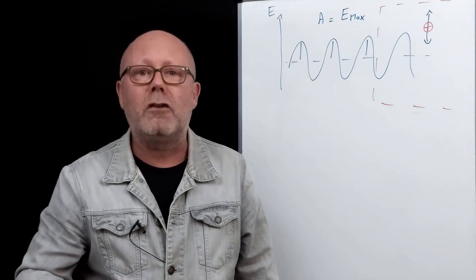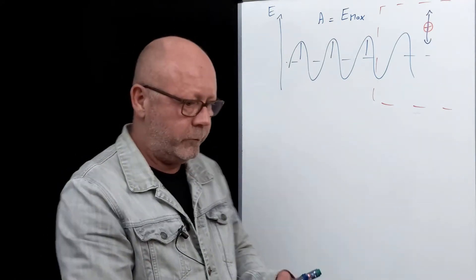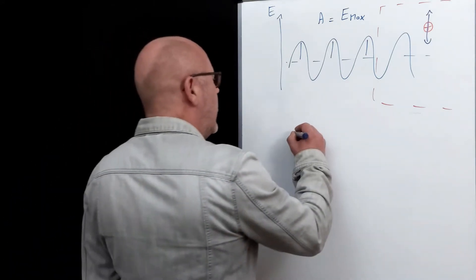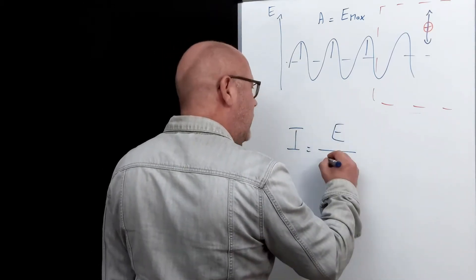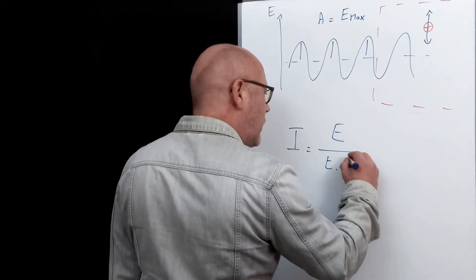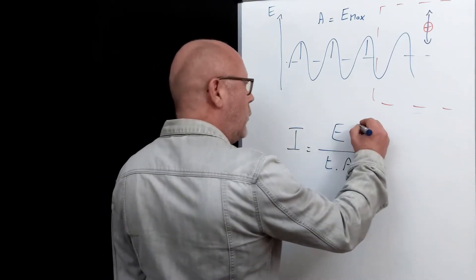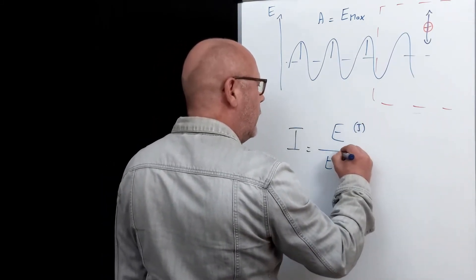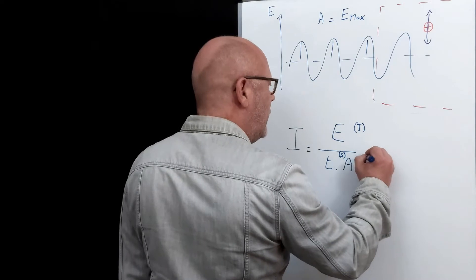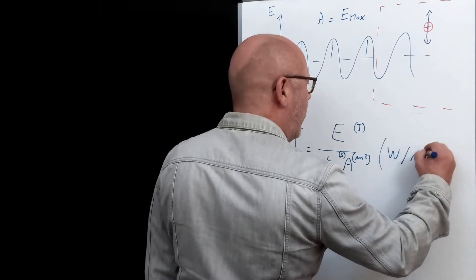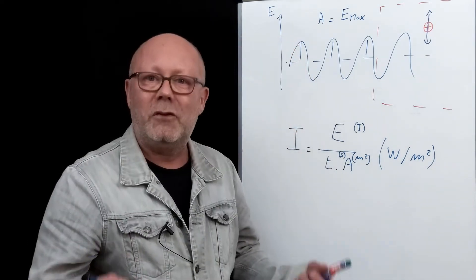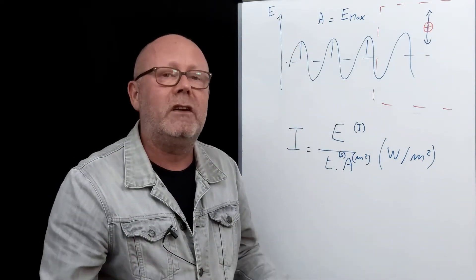Well, for that we use the concept of intensity. Intensity is the energy that is received for every second per unit area. So you see the unit will be joules per second per meter square. In other words, watts per meter square. When it comes to light, we perceive this intensity as brightness.